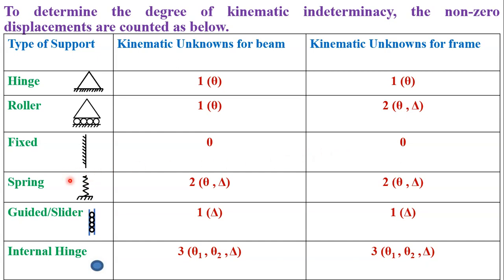The next type of support is spring. Sometimes spring is used as a support. When spring is used in case of a beam, it permits 2 degrees of freedom — 1 rotation and 1 displacement. Same is the case for a frame. While a guided support or slider permits only 1 displacement in case of a beam, and also a displacement in case of a frame.